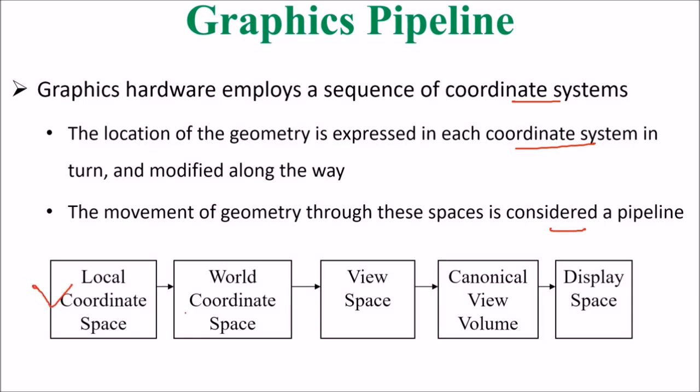So you had local coordinate space, then it was converted to world coordinate space, then to view space, then to canonical view volume and finally viewport or display space. This is the pipeline in 3D graphics. Thank you.